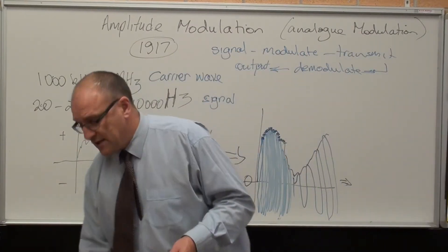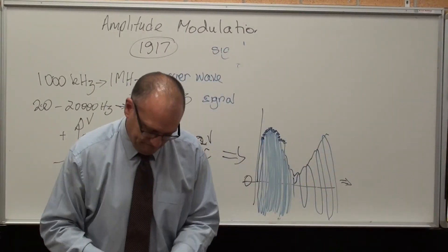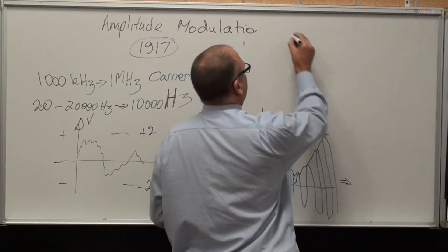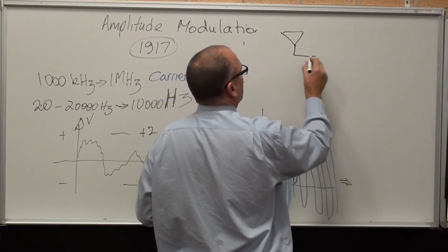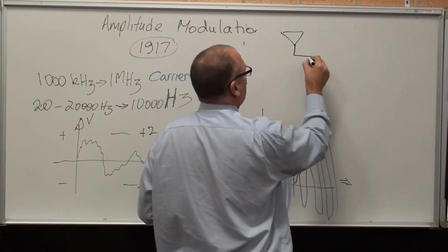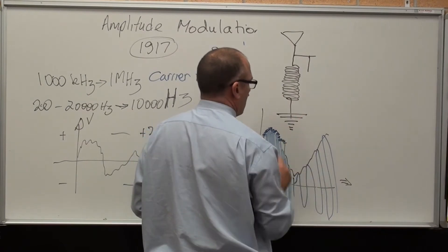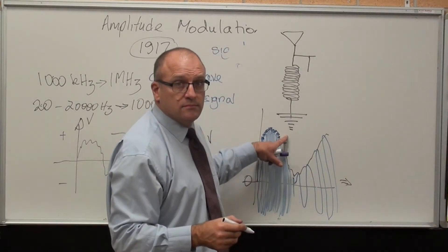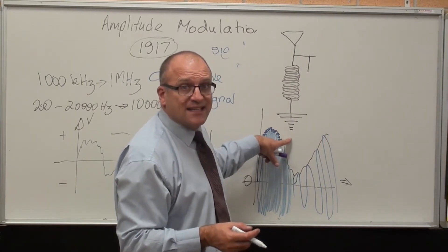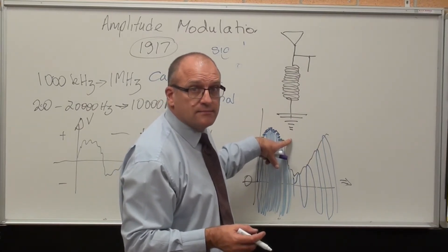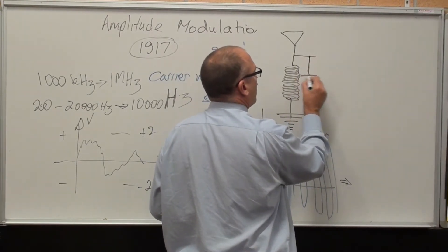Let's now have a look at the demodulation circuit. It is simply, that is an aerial. Comes out of the aerial, across a coil. Going down to Earth. This is the simplest form of AM radio that existed in the 1920s that did not need a battery.